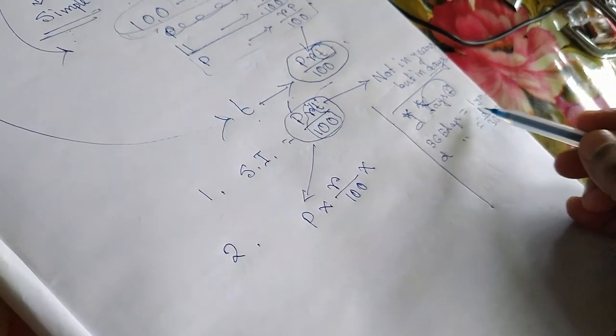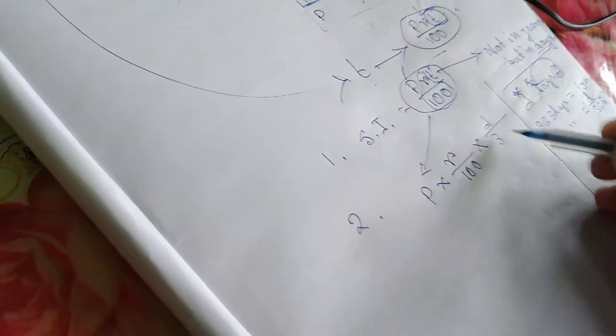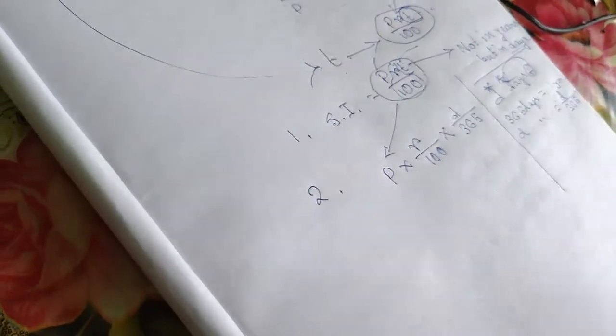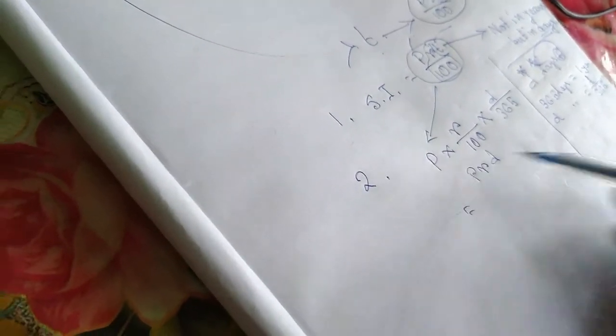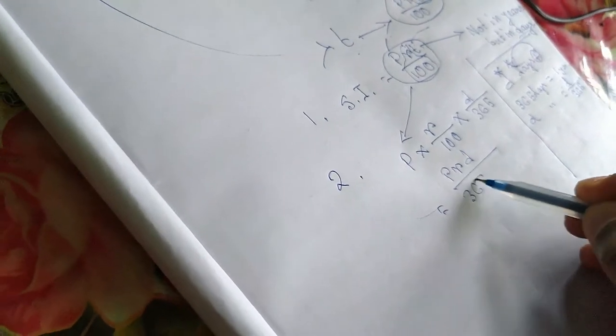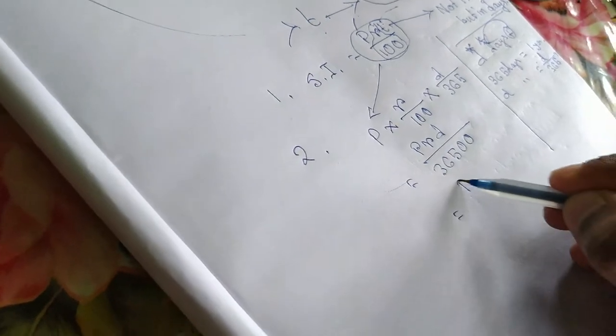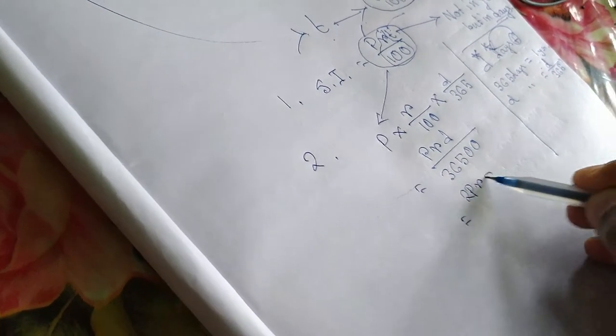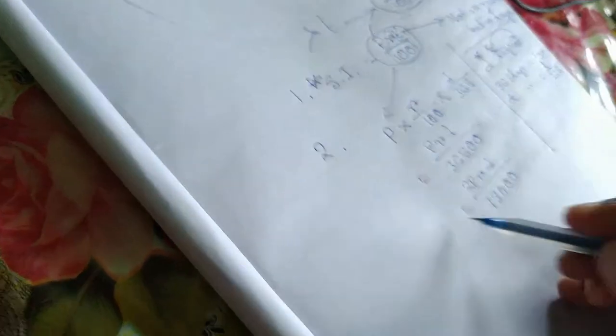Just substitute this D by 365 into the formula, so we get PRD by 36500, or you can find it in some books as PRD by 73000.